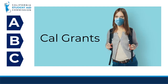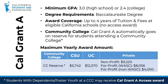We will begin with an overview of the three different types of Cal Grants: Cal Grant A, B, and C. Cal Grant A awards target lower to middle incomes, have a minimum GPA requirement of 3.0, and provide assistance with tuition and fees for associate or bachelor degree programs that are at least two years in duration.